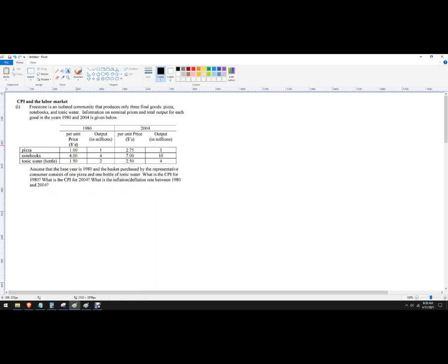Now, one thing you can do is just eyeball. I can see the prices were $1, $4, and $1.50, and then looking ahead in the future, $2.75, $7, and $2.50. So we know there's going to be inflation, not deflation. So your numbers are going to be positive. We also have higher output, but in this case when you use the CPI, you don't really need to measure the number of goods.